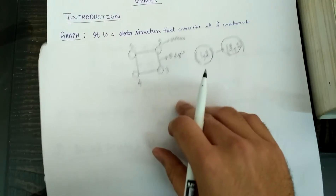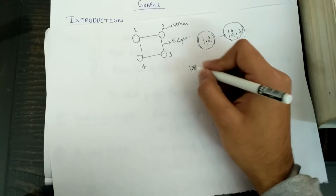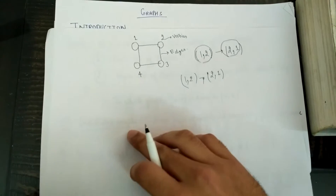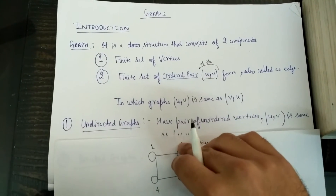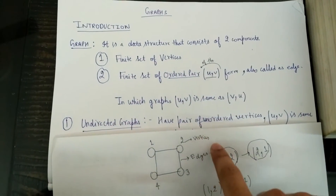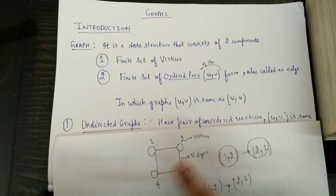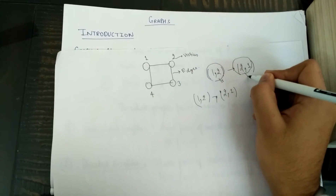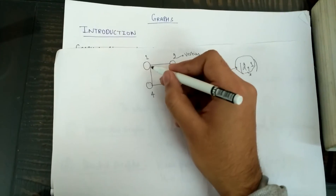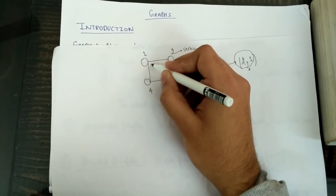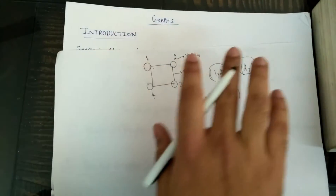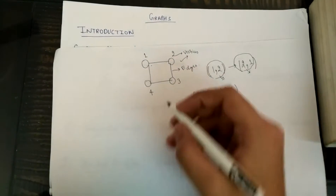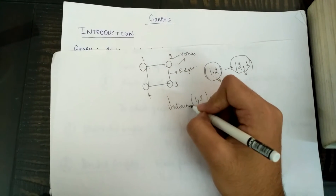Where the order does not matter — where we can say that if there is an edge from 1 to 2, there is also an edge from 2 to 1 — these are called undirected graphs. Undirected graphs have a pair of unordered vertices, so UV is the same as VU. In these types of graphs, 1,2 is the same as 2,1 because you are allowed to go anywhere in the graph.